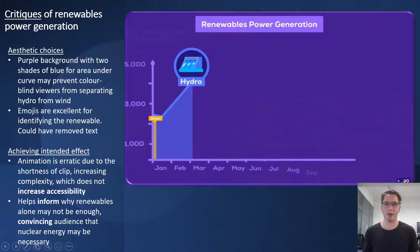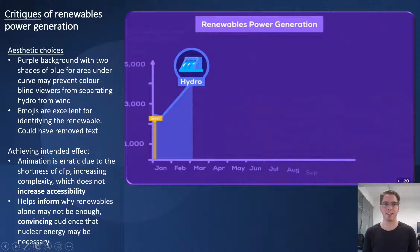The animation is quite erratic, due to the clip being about three seconds long. Additionally, other elements of the graph such as axis ticks and labels are animated and bouncing around too, which increases complexity and increases cognitive strain — all of which does not increase the accessibility. The animation does fit into a larger point that renewables alone may not be enough to reduce emissions, convincing the audience that alternatives such as nuclear may be necessary.